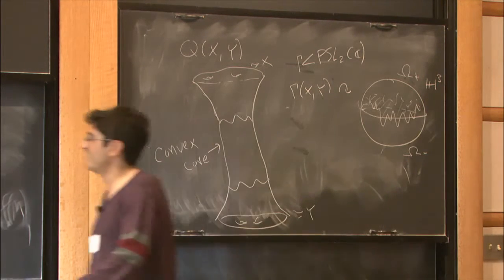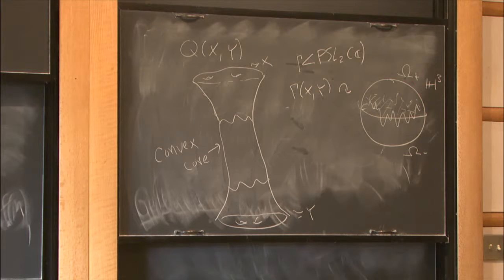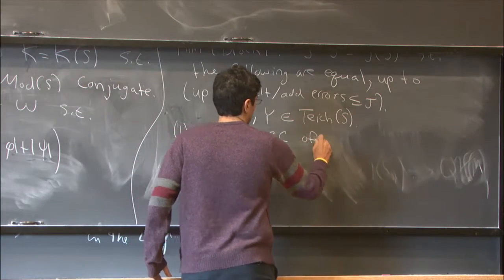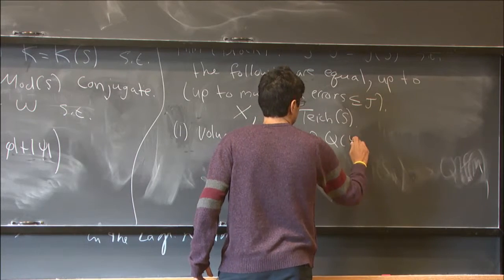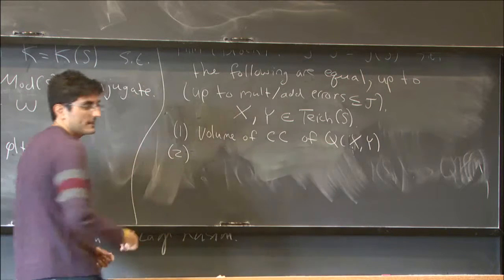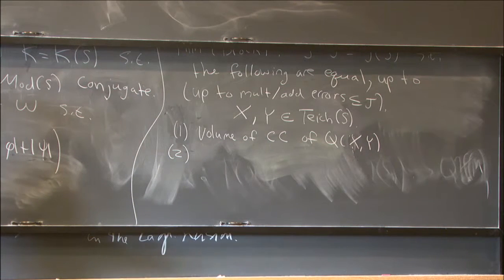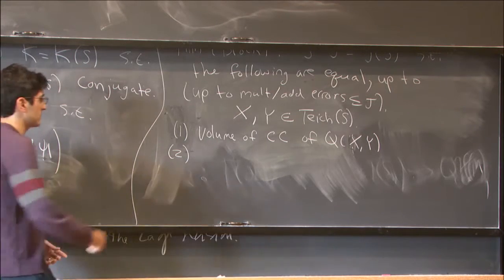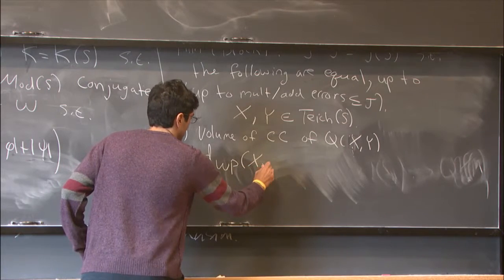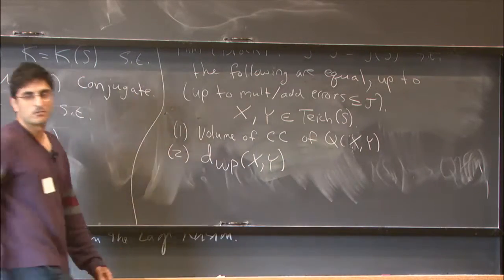Now that that's done, the first of these three quantities is the volume of the convex core of Q of xy. The second quantity is the distance in the Weil-Petersson metric between x and y in the Teichmüller space.